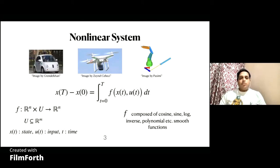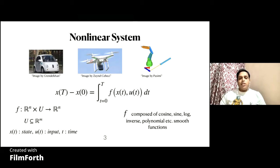A nonlinear system is a system where the state evolves according to the given equation. In this equation, xt is the state of the system at any given time t, ut is the input to the system, and f is a nonlinear function, which is typically composed of smooth functions like trigonometric functions, polynomials, or inverse functions. The difference between the state of the system at any given time t and the initial state x0 is computed by the given integral.